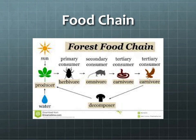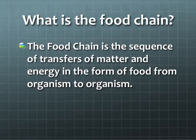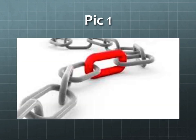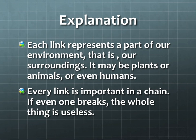What is the food chain? The food chain is the sequence of transfer of matter and energy in the form of food from organism to organism. Think of a chain and the links in it. Each link represents a part of our environment — our surroundings — it may be plants, animals, or even humans. Every link is important; if even one breaks, the whole thing is useless.